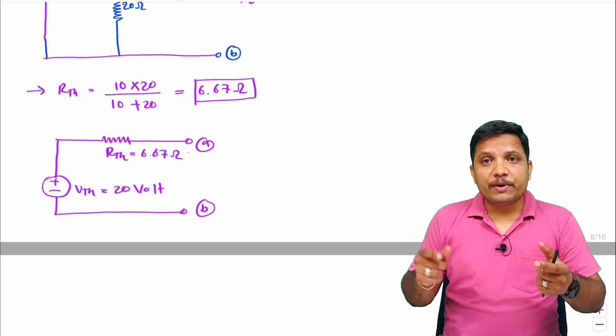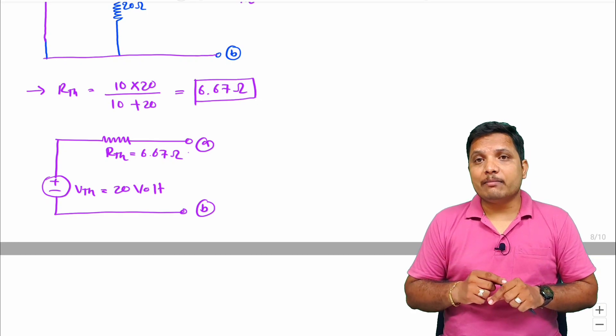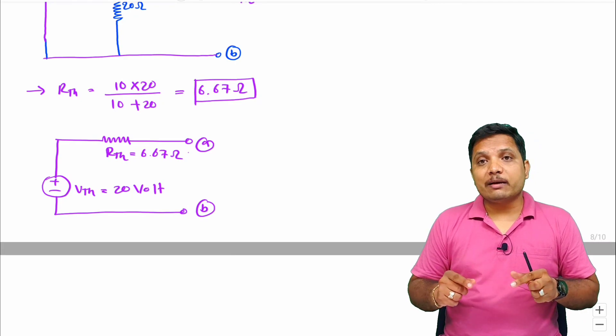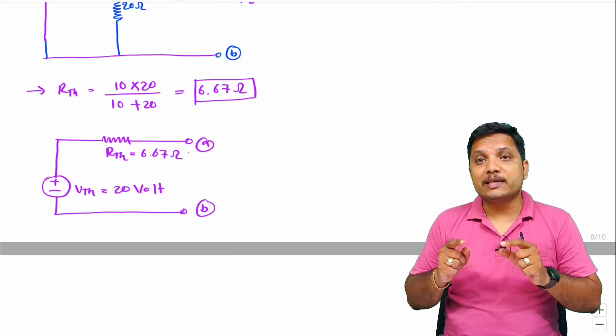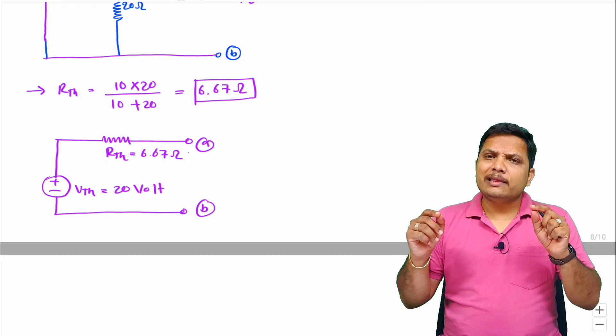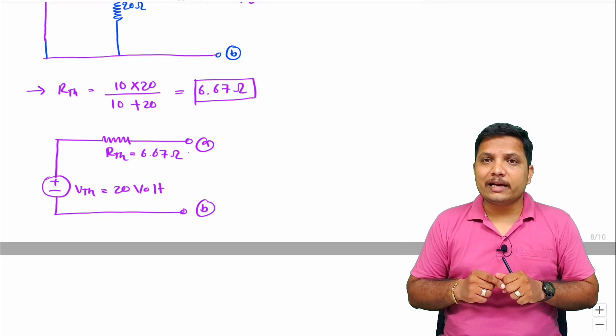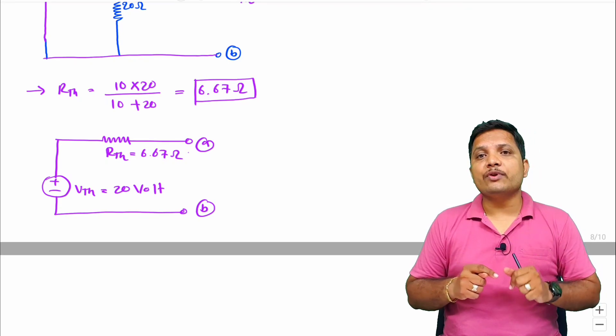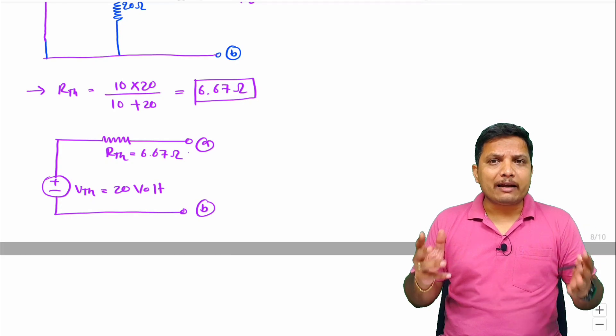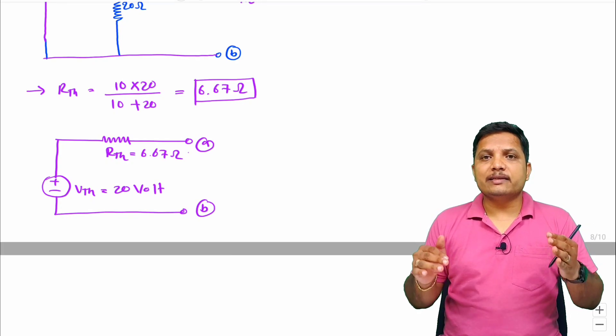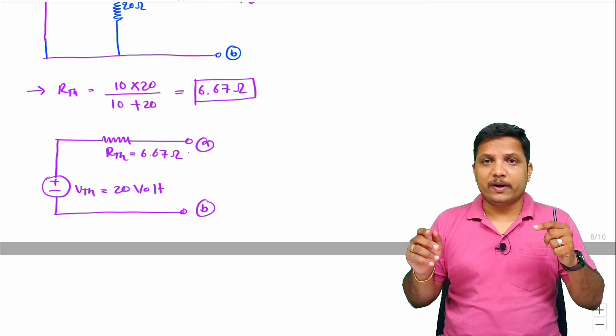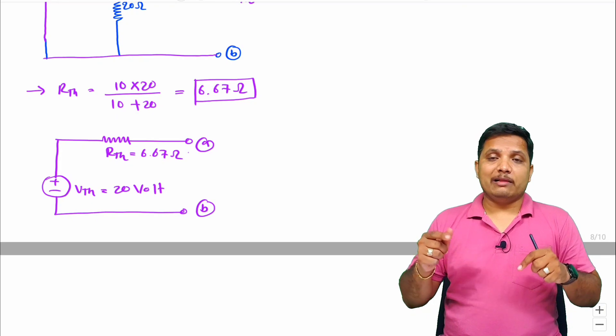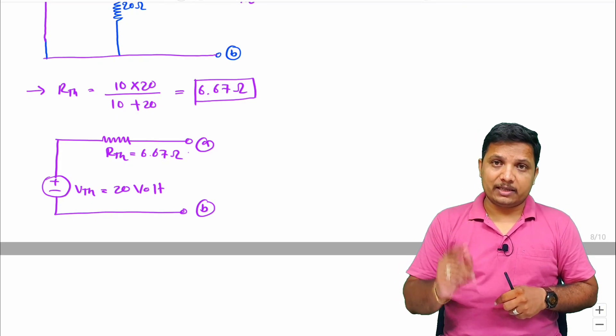And in next few videos you will be getting few more examples related to dependent sources. Those examples are very tricky. You should see that as in that there is a little change in calculation of RTH equivalent. And if you see that change then it will be easier for you to understand all the network which is there in terms of resistance, inductance, and capacitance. I hope you have understood this. If you have any further queries just place that in comment box. I will definitely solve your queries. Thank you so much for watching this video.